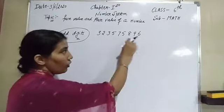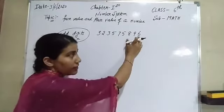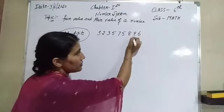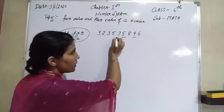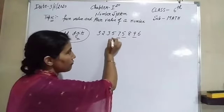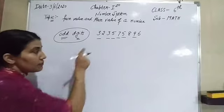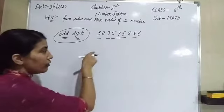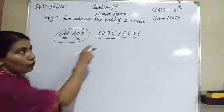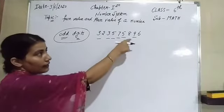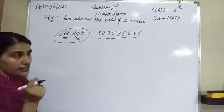First, mark the odd digits. Six is even. Nine is odd. Eight is even. Five is odd. Seven is odd. Five is odd. Three is odd. Three is odd. We have to write the face value and place value of only those underlined odd digits.